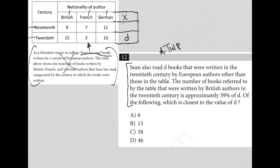The next sentence says, the number of books referred to by the table that were written by British authors in the 20th century, that's the 15 here, British authors 20th century, is approximately 39% of D. Okay, well, here's another quantitative thing, which means I can translate that. 39% of D as a math question. In fact, we can go beyond that. Really, this whole sentence is saying that 15 is equal to 39% of D.